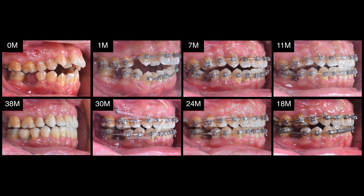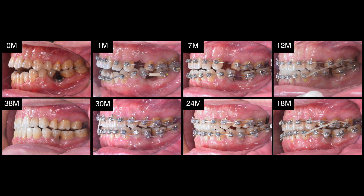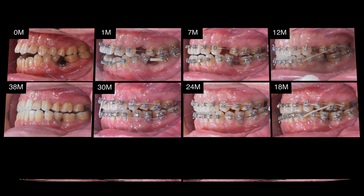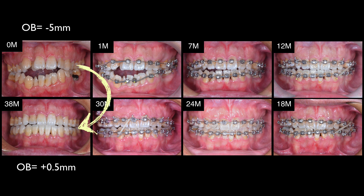The total treatment time was 38 months. The lower right first molar was replaced with an implant-supported crown, and the lower left first molar space was completely closed. Most importantly, the 5mm open bite and anterior crowding had been hugely improved.